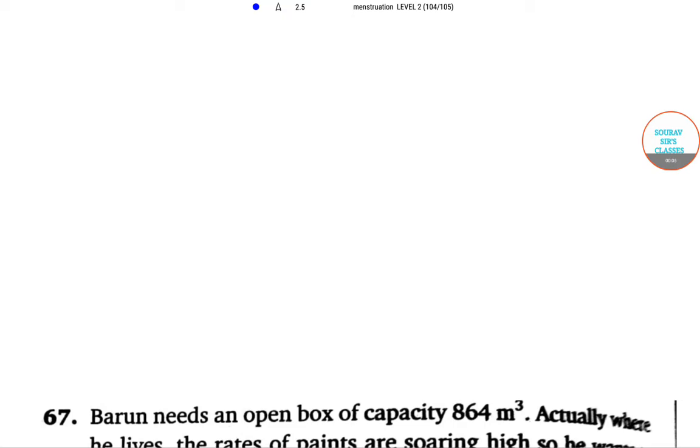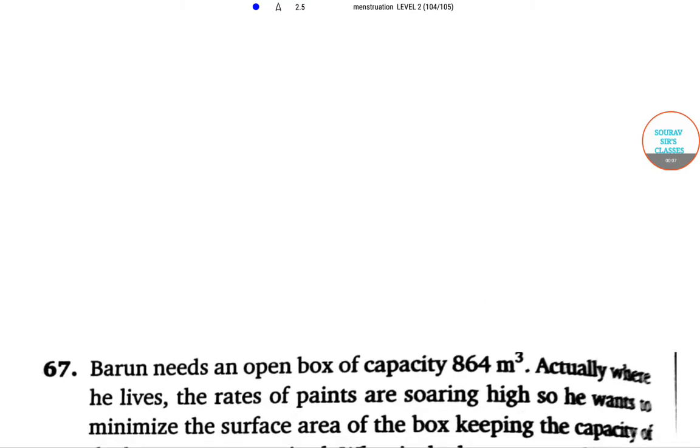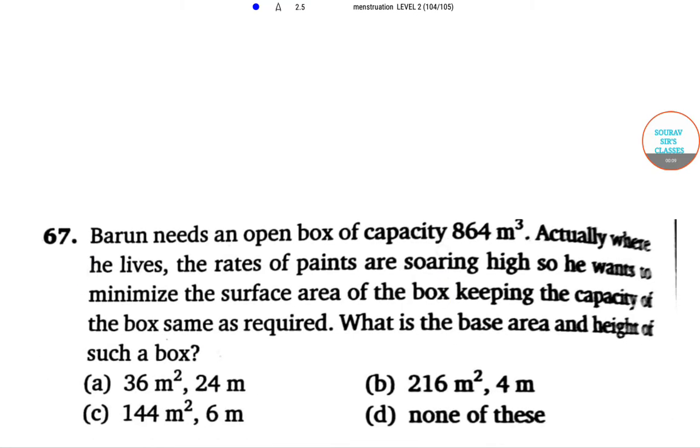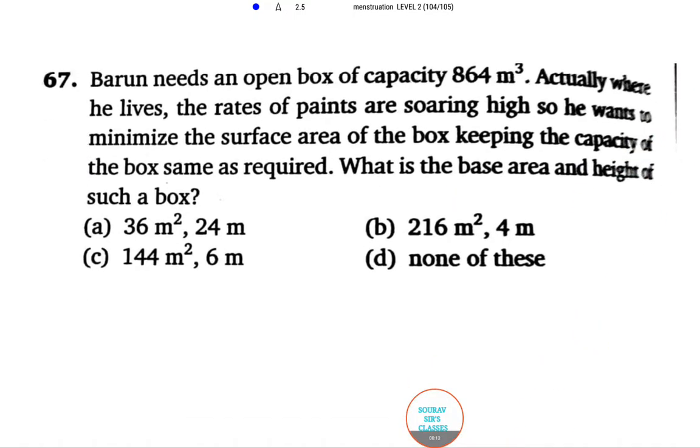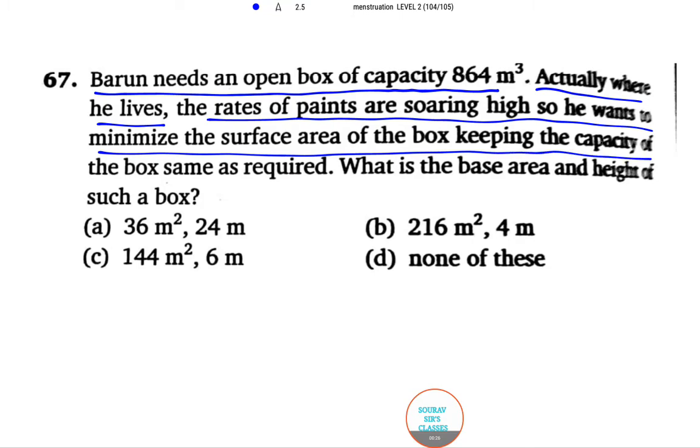Hello, welcome to service classes. Let's do a problem from optimization. Barun needs an open box of capacity 864 cubic meters. Actually where he lives, the rates of paints are soaring high, so he wants to minimize the surface area of the box keeping the capacity of the box same as required.